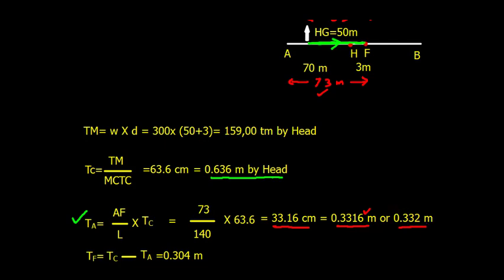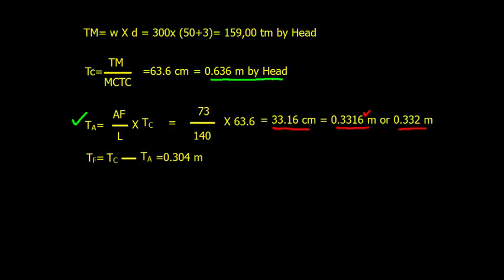We can round off to 0.3316 meters or 0.332 meters. Now the change in the forward draft, TF equals TC minus TA, so 0.636 minus 0.332 equals 0.304 meters.